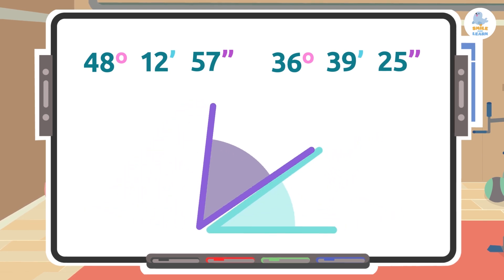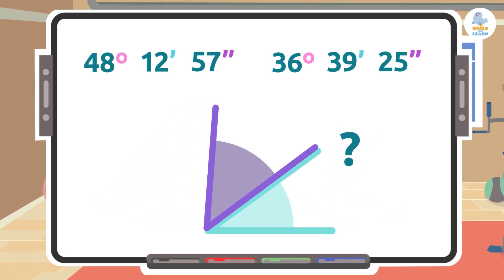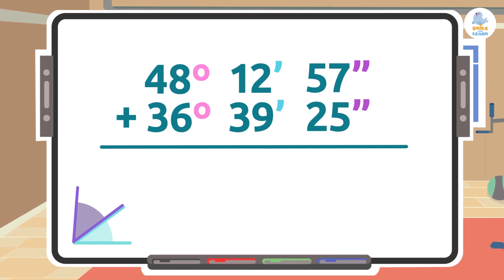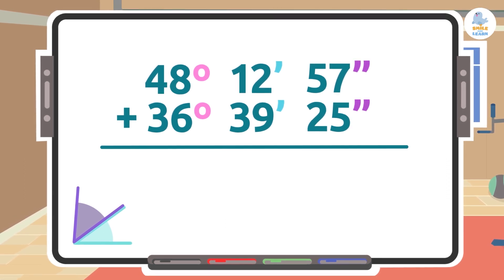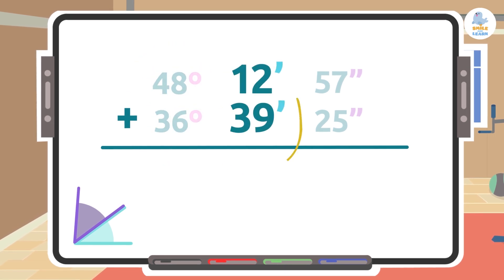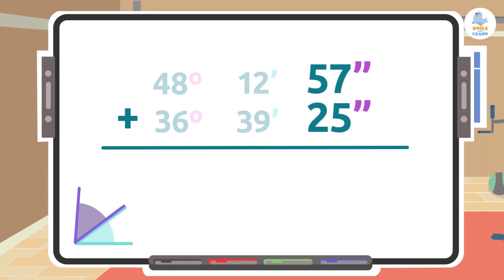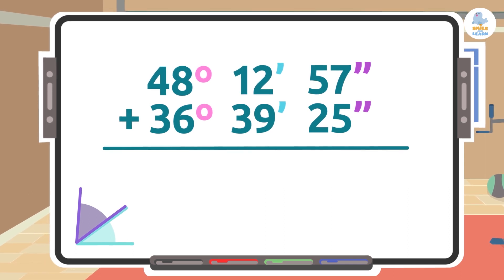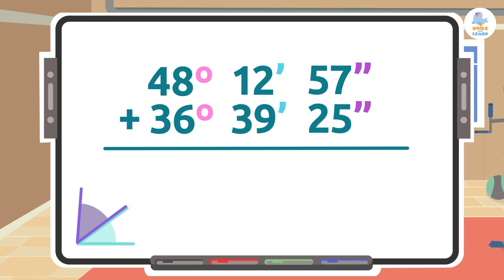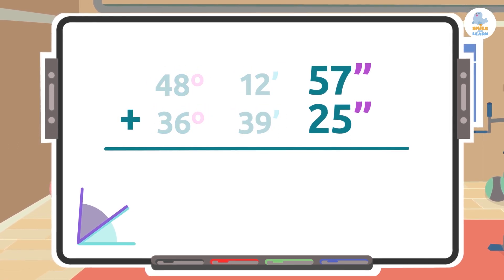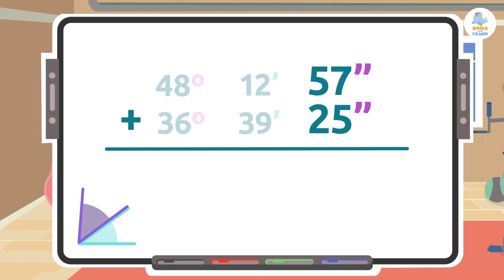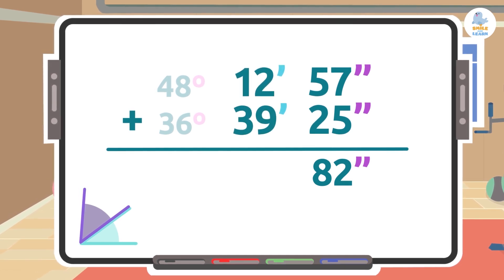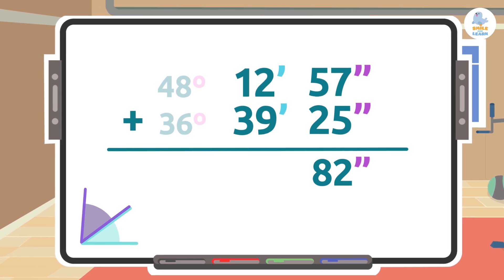What would be the exact sum of both angles? Pay close attention. Remember, first we must place the angle measurements one below the other, just like regular addition — degrees under degrees, minutes under minutes, and seconds under seconds. Once placed correctly, we add each column separately. We'll start by adding the seconds: 57 seconds plus 25 seconds is 82 seconds. Now we'll add the minutes: 12 minutes plus 39 minutes is 51 minutes.